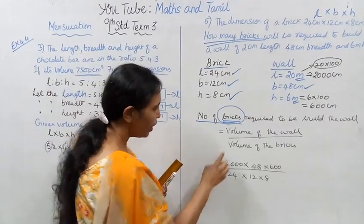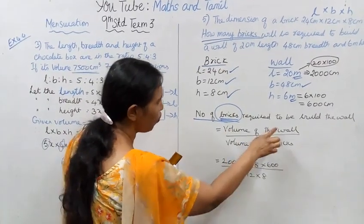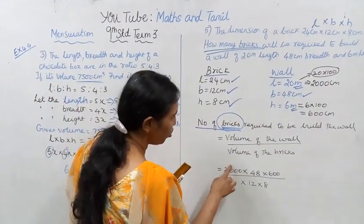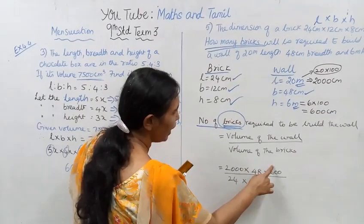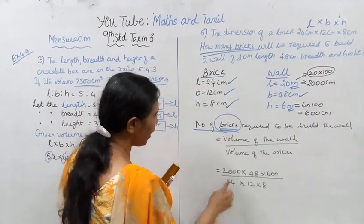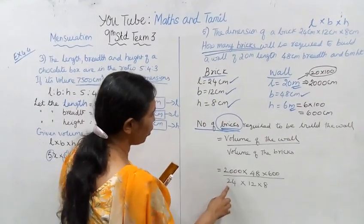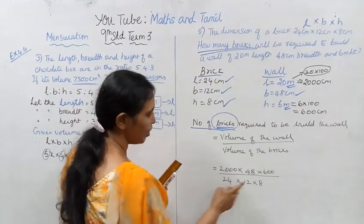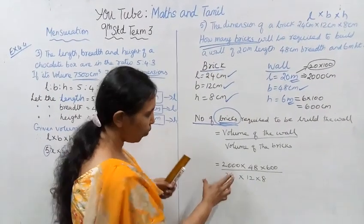Volume of the wall: L = 2000, B = 48, H = 600. Volume of each brick: L = 24, B = 12, H = 18.